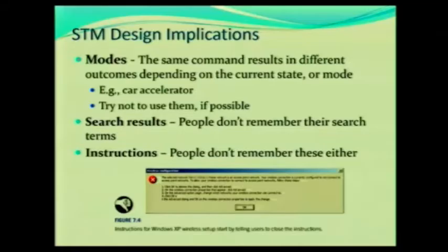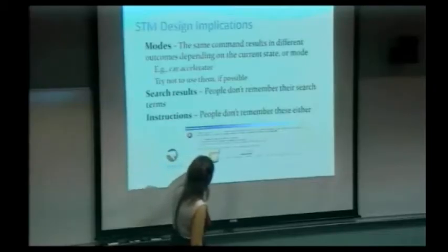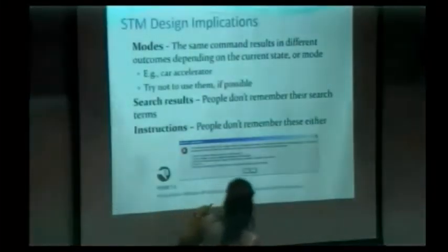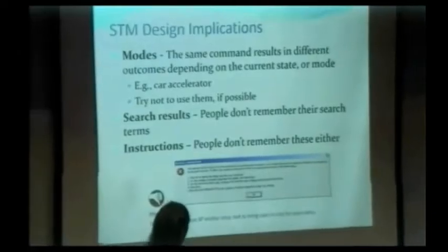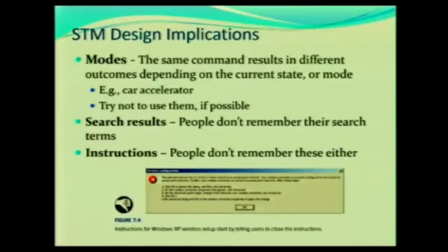This is actually a real message from Windows — it's from the Johnson book. The user is trying to configure their wireless. Here it gives you a list of instructions: Click OK to close this dialog. Then click Advanced. On the wireless connection properties that appear, click Advanced. On the Advanced option page, change which networks your wireless connection can connect to. Click OK in the Advanced dialog, and OK on the wireless connection properties to apply the change.